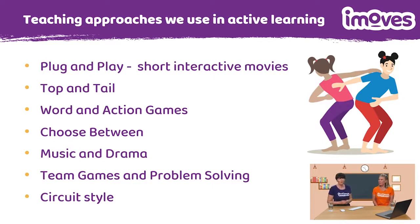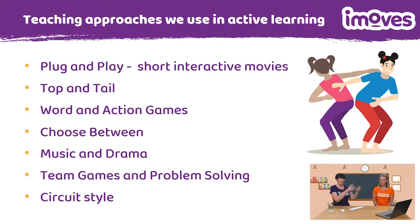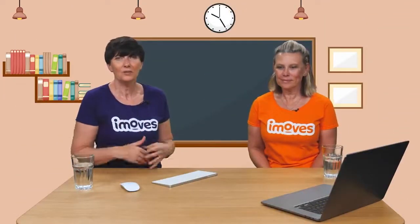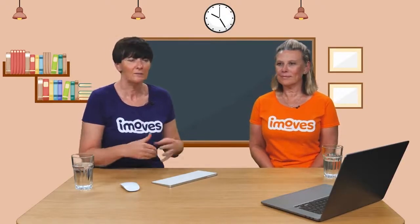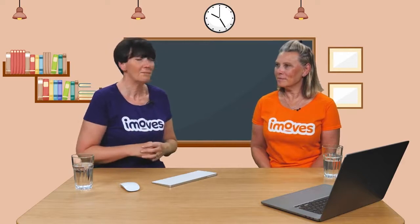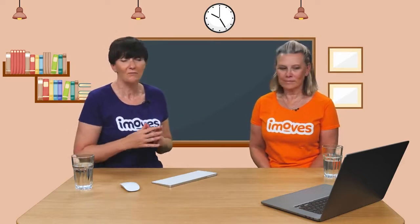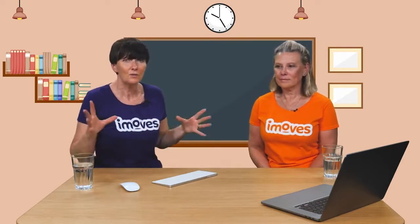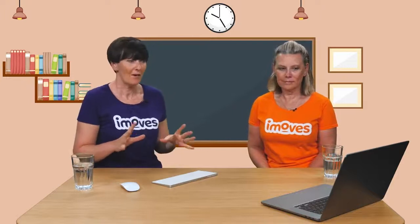We also use an approach called top and tail — doing something at the beginning and something at the end to celebrate. We have word action games, choose-between activities (true or false, high or low), music and drama, team games, problem solving, data collection, and a circuit-style approach where children follow a set of circuit cards. All you'll need is your usual teaching equipment: a whiteboard, a stereo, a printer for flash cards, and you can just slot it into your usual teaching approaches without any fuss.